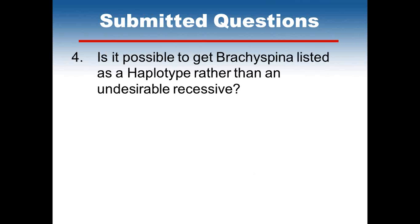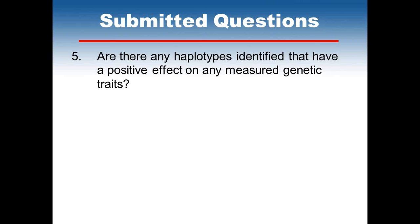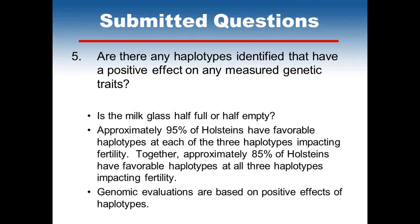Q: Is it possible to get Brachyspina listed as a haplotype rather than as an undesirable recessive? The inclination is that it may be more likely that these haplotypes at some point would become undesirable recessives rather than the reverse. Q: Are there any haplotypes identified with a positive effect on measured genetic traits? Approximately 95% of Holsteins have favorable haplotypes at each of the three haplotypes affecting fertility, and together about 85% of Holsteins have favorable haplotypes at all three. Genomic evaluations are based on positive effects of haplotypes.